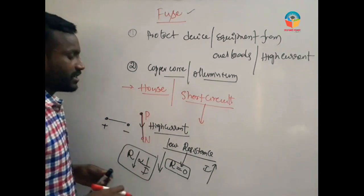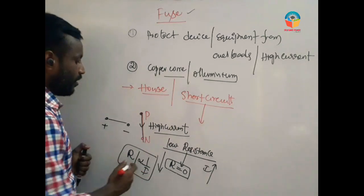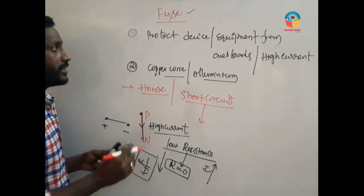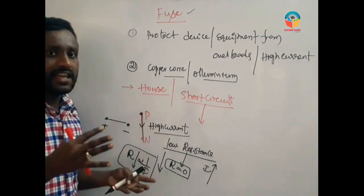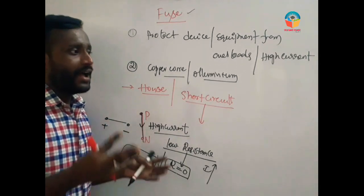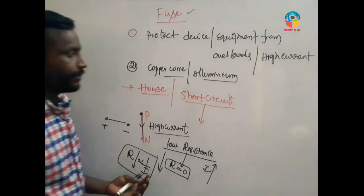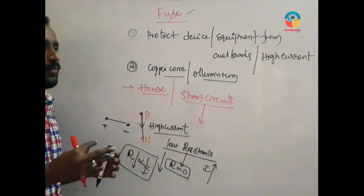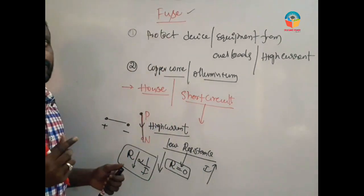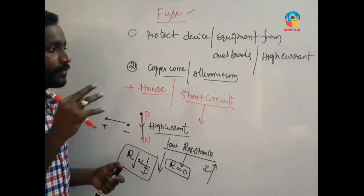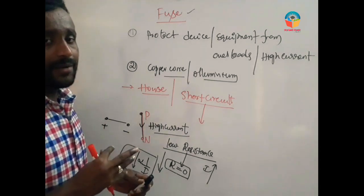When the resistance value is lower, the current value is higher. A high amount of current passes through the device or circuit. Then the high amount of current passing through the device will cause the device to go into a burning state or get damaged. We need to protect the device from the higher amount of current.